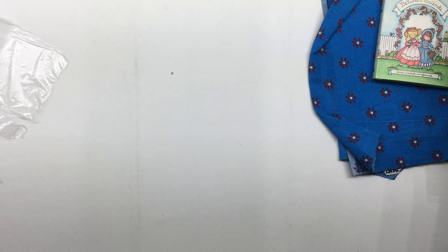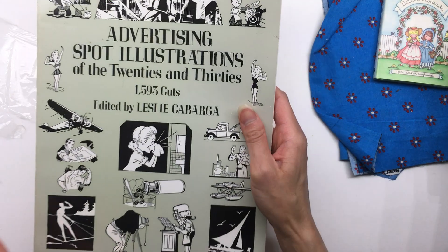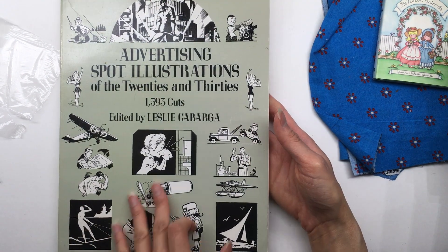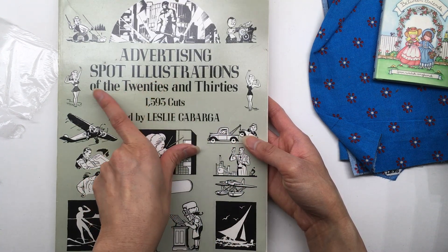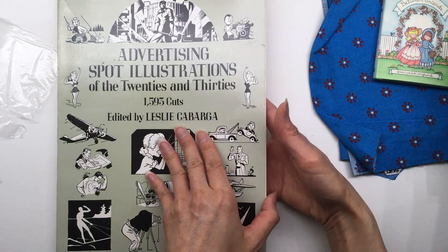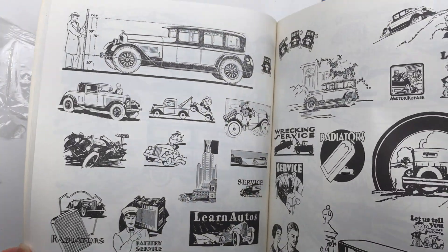And then lastly, I just got a couple items from the Goodwill outlet. Found this book. They are illustrations of the 20s and 30s, and there's just different images in here.